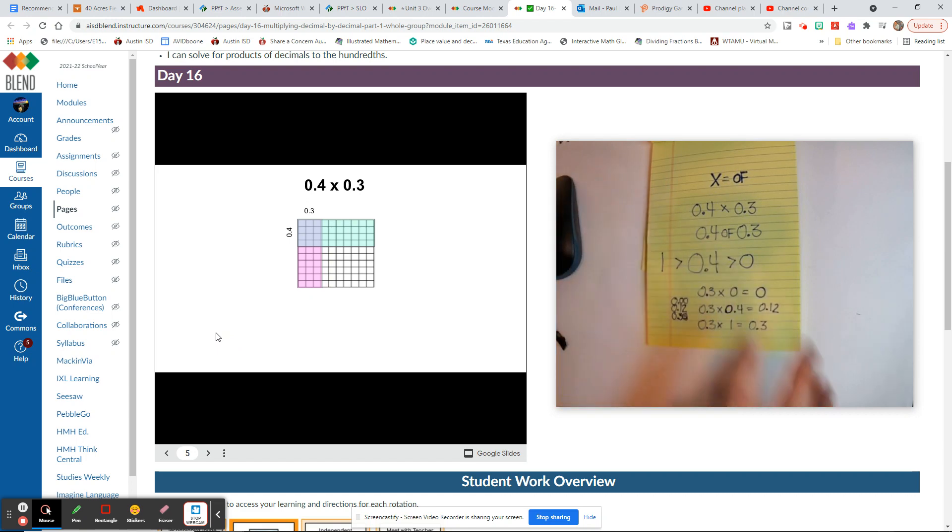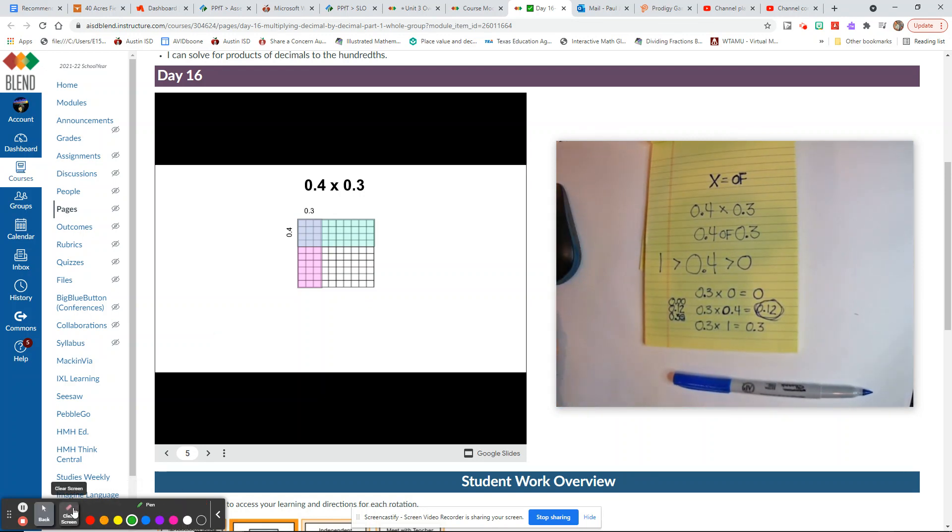Just like we got before, 12 hundredths. And like I said, when we just take these numbers, multiply them, ignore the decimal point, four times three is twelve. Count the decimal places in the problem - there's two.